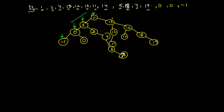For example, if we want to search 5: compare 5 with 11 — it's less, so go left. Compare with 1 — it's greater, so go right. Compare with 2 — it's greater, so go right. Compare with 4 — it's greater, so go right. Here 5 matches, so we found the data. In this case too, we do not have to search the complete binary search tree. The time complexity of a binary search tree is O(log n), which is much less than the O(n) of a regular binary tree.